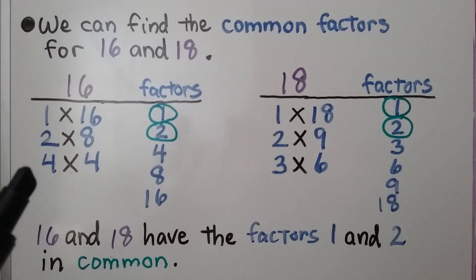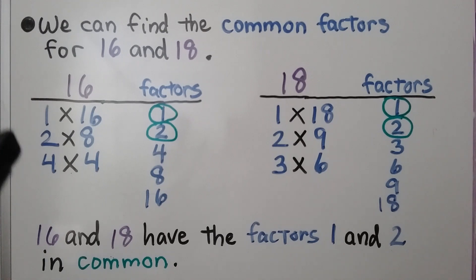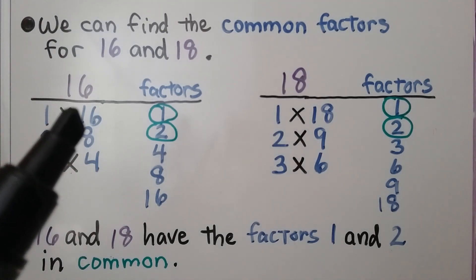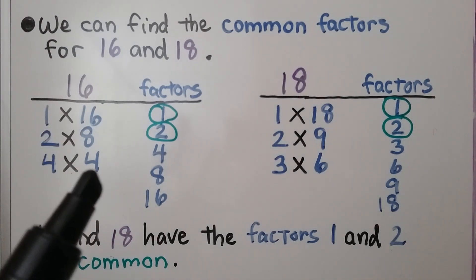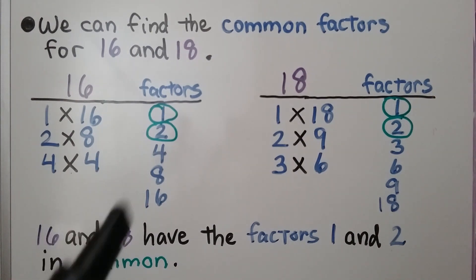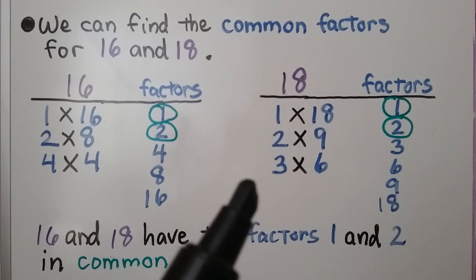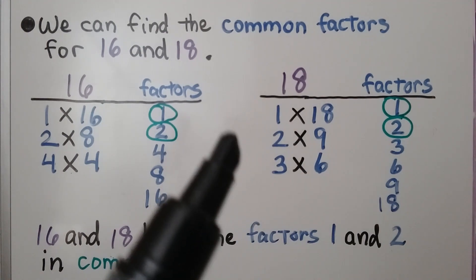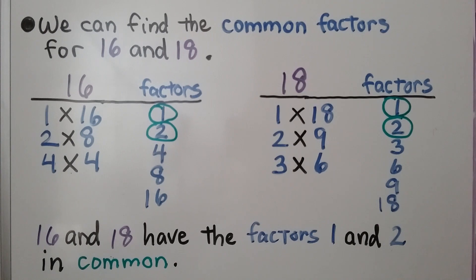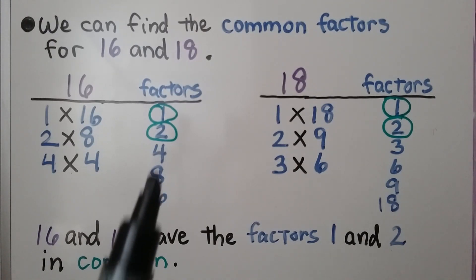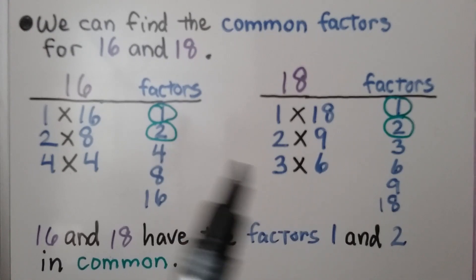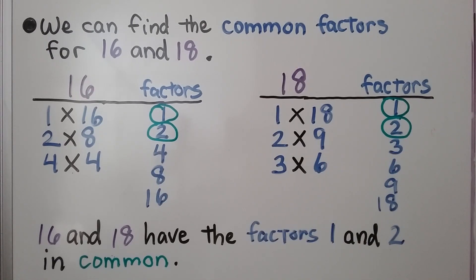2 times 8, 4 times 4, so the factors are 1, 2, 4, 8, and 16 — notice we only list the 4 once. For 18 we have 1 times 18, 2 times 9, 3 times 6, so the factors are 1, 2, 3, 6, 9, and 18. We circle the ones they have in common: they both have 1 and 2, and that's the only thing they share.